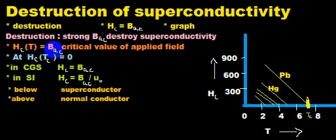HC is the function of T equals BAC. BAC is the critical applied magnetic field. When HC is the function of the critical temperature, then HC equals zero. It is shown on the graph. This is the critical value of lead and the critical value of mercury.